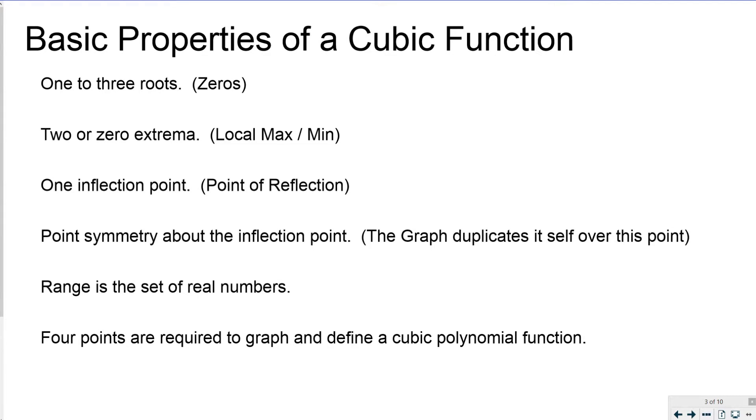Basic properties of the cubic function are that it has 1 to 3 roots, the zeros of a cubic. Like a quadratic had 0, 1, or 2 roots, a cubic is guaranteed to have at least 1 root. A quadratic could have no roots, all imaginary. A cubic has at least 1 all the way up to 3.